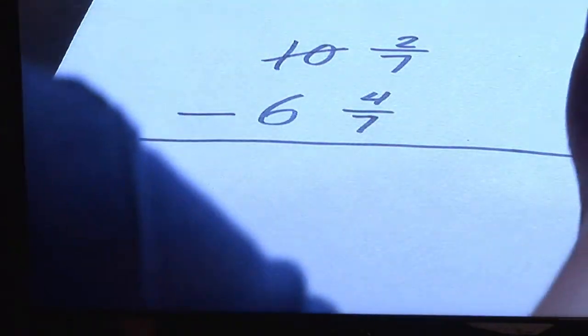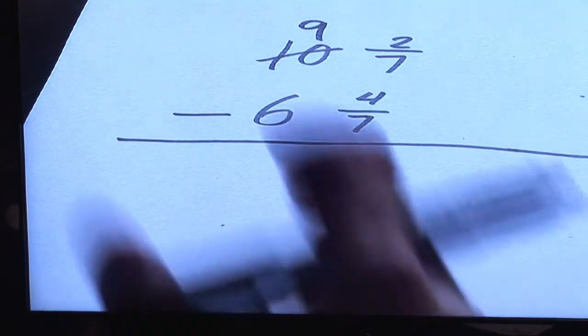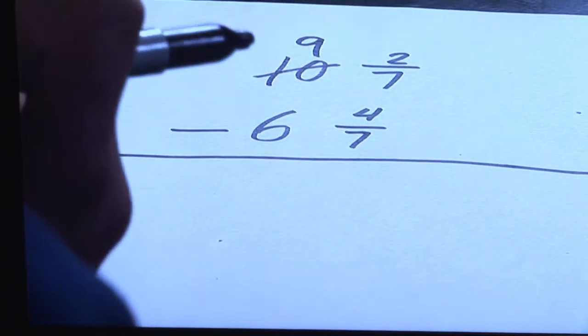So where do you borrow from? It has to be from the ten because it's right next to it. If you borrow, two things happen. If you have to borrow one whole, the ten now becomes a nine because you're borrowing one whole.